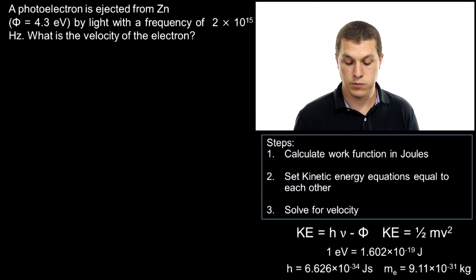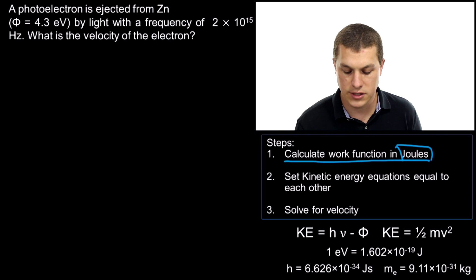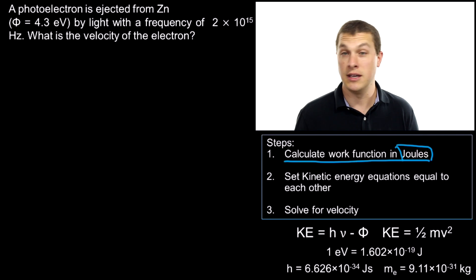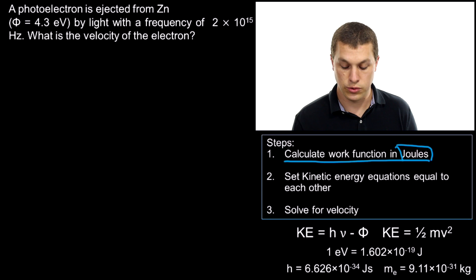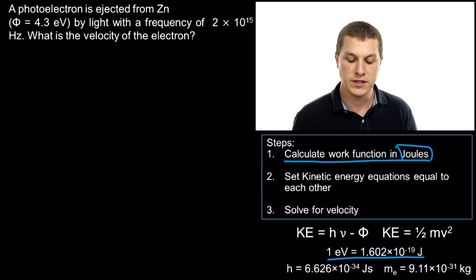I've broken down this problem into three steps. The very first thing we're going to do is calculate our work function in joules. It's very common to be given our work function in eVs, and we just have to convert to joules. That's a pretty straightforward conversion. I have a conversion factor right down here: 1 eV is equal to 1.602×10⁻¹⁹ joules.